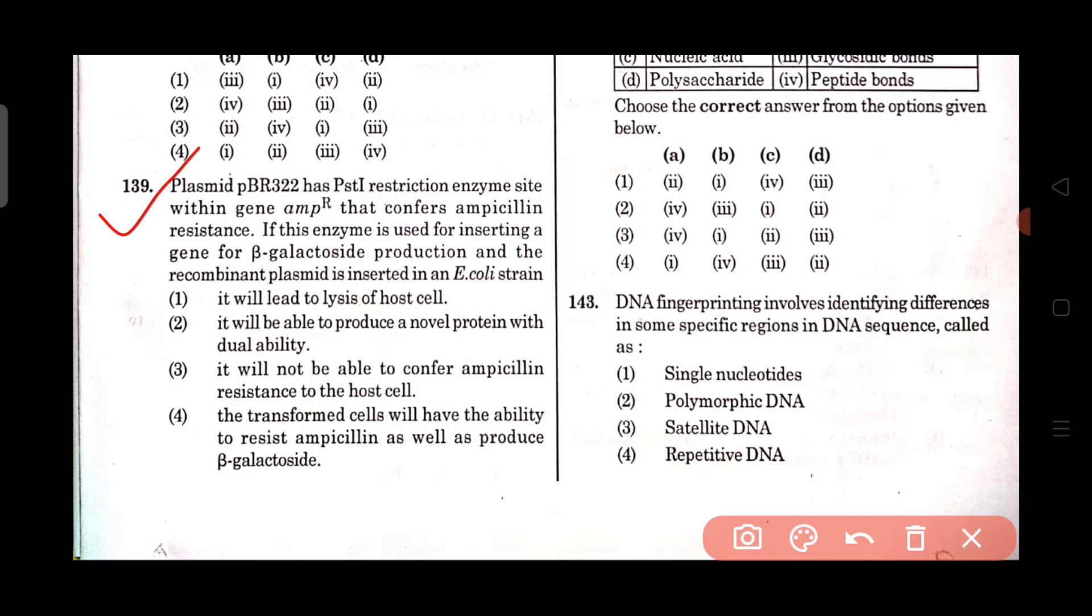For PBR322, option 3 is right. It will not be able to confer ampicillin resistance to the host cell.